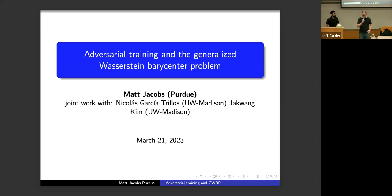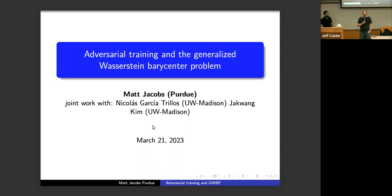Welcome to the IMA Data Science Seminar. We're very happy today to have Matt Jacobs here to give a talk. Matt got his PhD from the University of Michigan in 2017, was a postdoc at UCLA after that, and is now at Purdue as an assistant professor. He's here to talk today about adversarial training and the generalized Wasserstein-Barycenter problem.